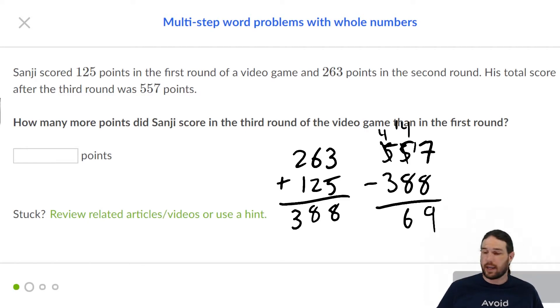So we have 169 points in round three. But the question was, how many more points did Sanji score in round three than in round one? So we're going to take that 169. We're going to subtract 125. And our final answer is 44 points.